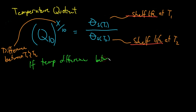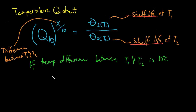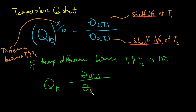If the temperature difference between T1 and T2 is exactly 10 degrees Celsius, you can use the second equation — this is just a simplified version of the first one. Q10 equals the shelf life at temperature 1 divided by the shelf life at temperature 1 plus 10 degrees Celsius. This comes from the first equation: if you substitute x with 10, the exponent becomes 1, simplifying to this second equation.